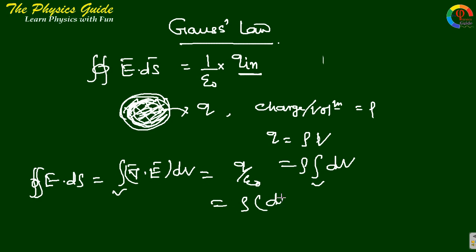This equals rho dV by epsilon naught. Taking the volume integral on both sides, we get del dot E minus rho by epsilon naught equals zero, so del dot E equals rho by epsilon naught.